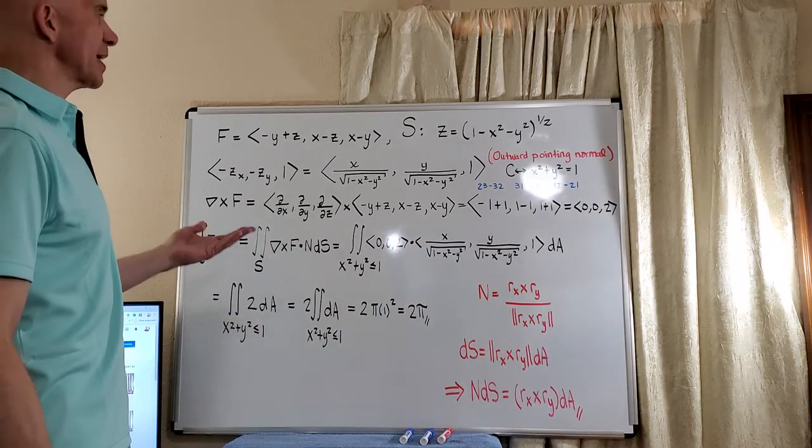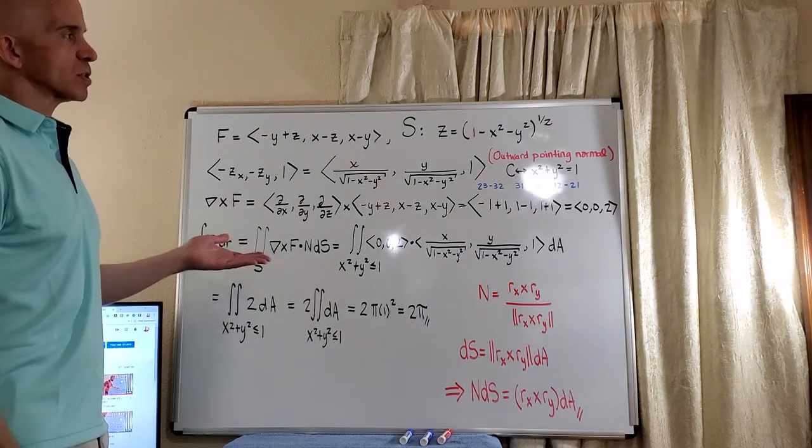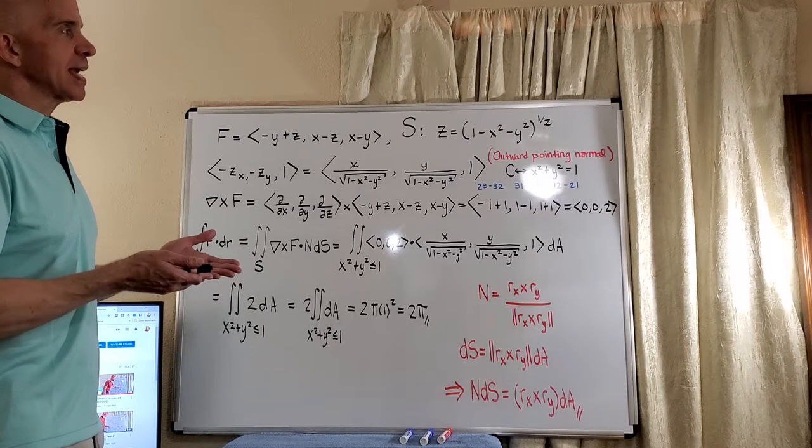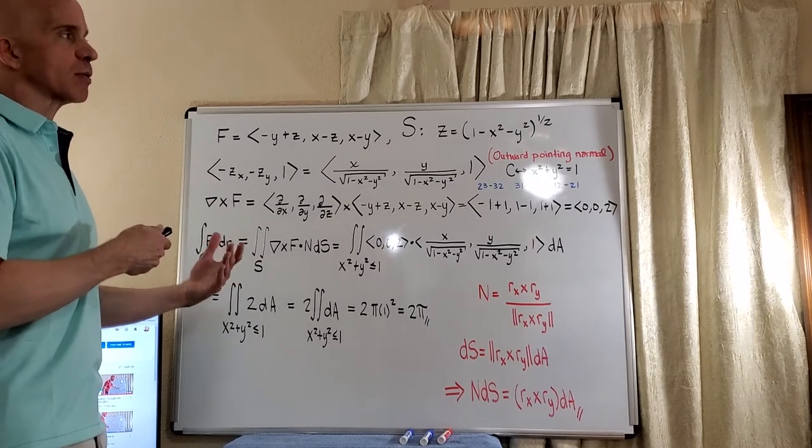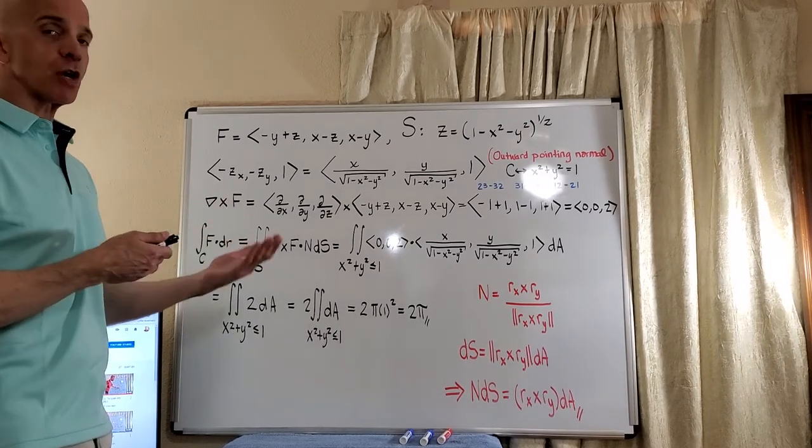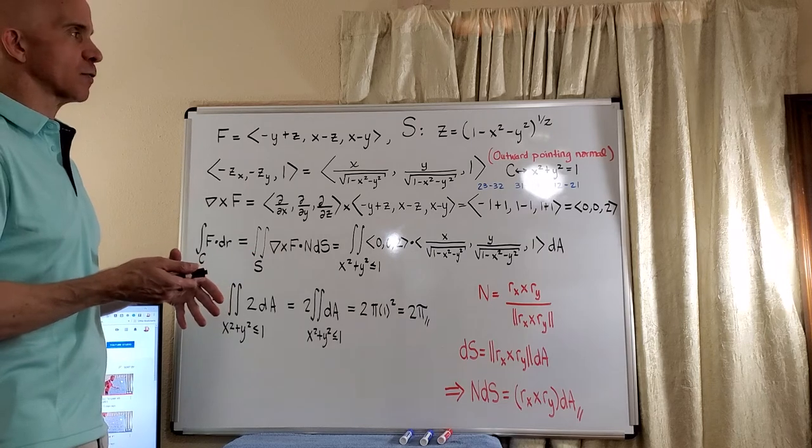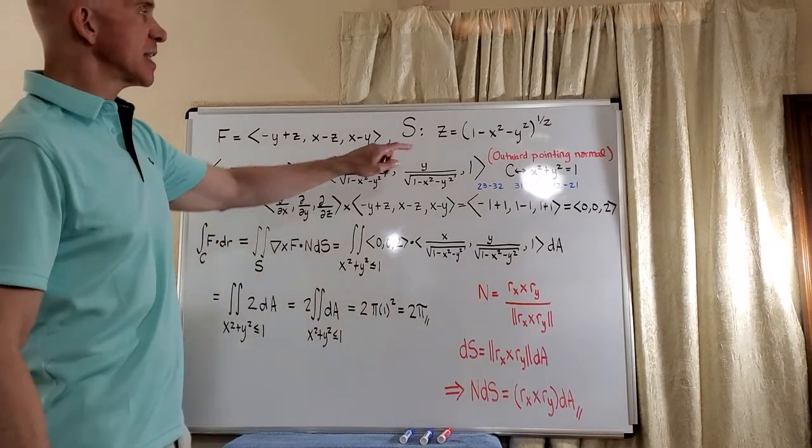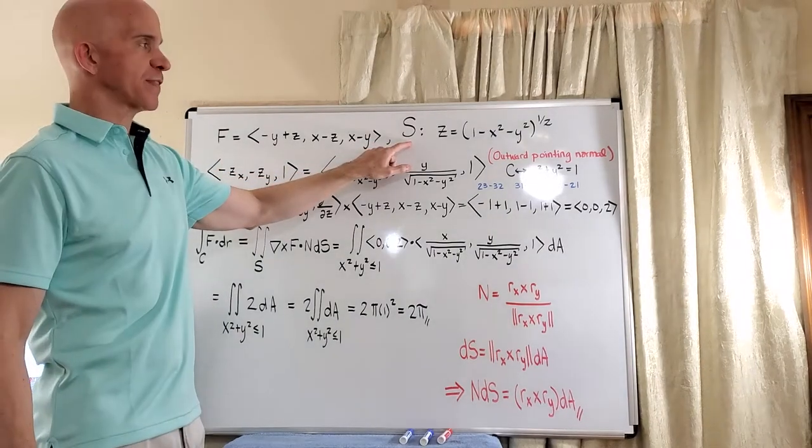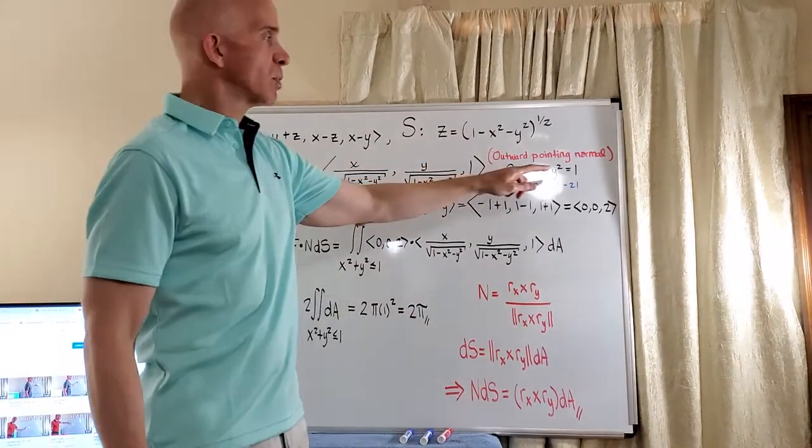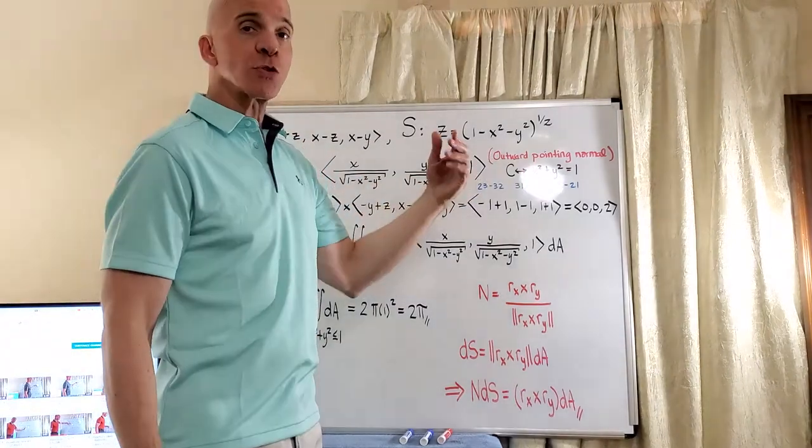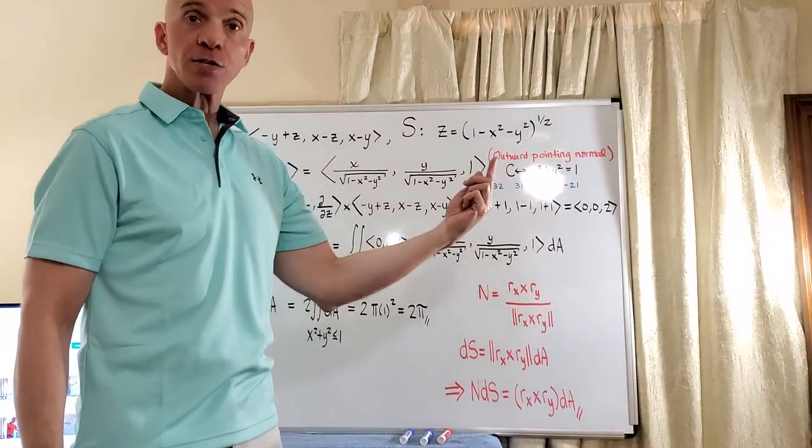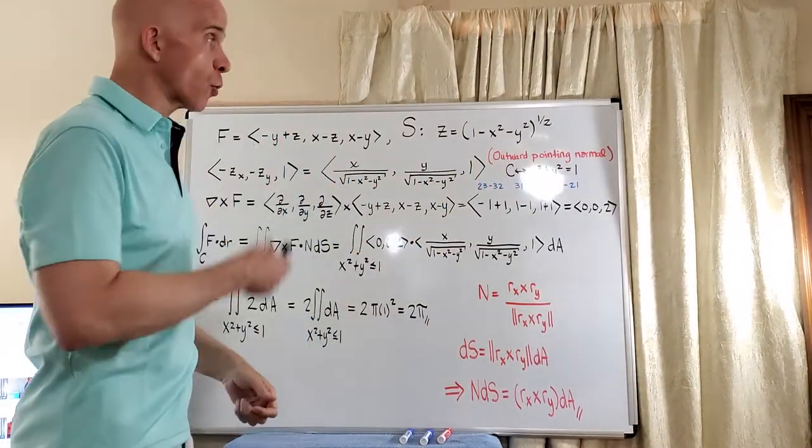Now in this particular example, and what I want to show first, is that with divergence theorem we have a closed surface. With Stokes' theorem, we do not have a closed surface. We basically have a surface that has a boundary. And in this particular case, the surface is the upper hemisphere, and so the boundary would just be the unit circle traversed with the positive or counterclockwise orientation.